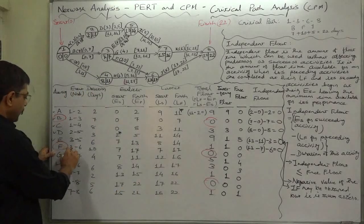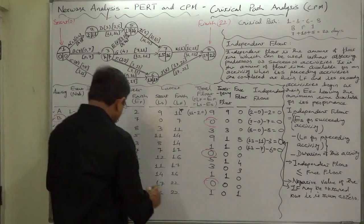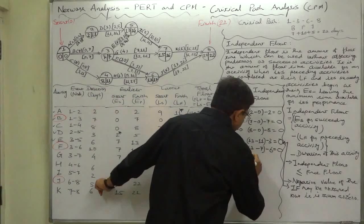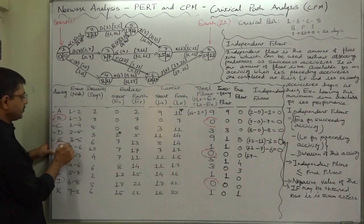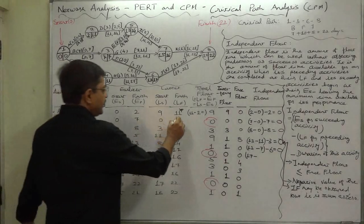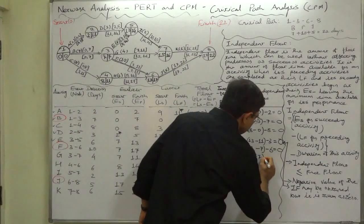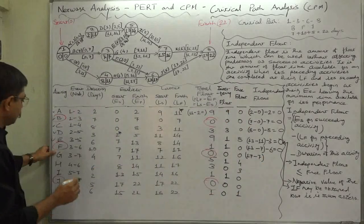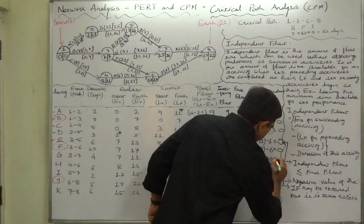Activity F (3,6): its immediate successor is J, whose earliest start time is 17. F's predecessor is B, with latest finish time 7. So: 17 minus 7 minus duration of F (10) equals 0. Independent float of F is 0.